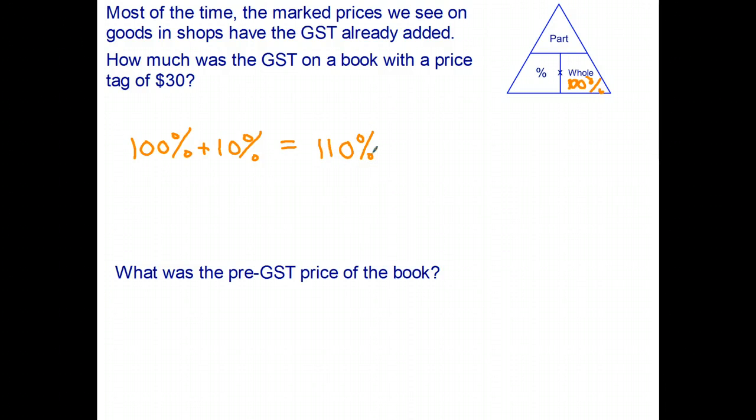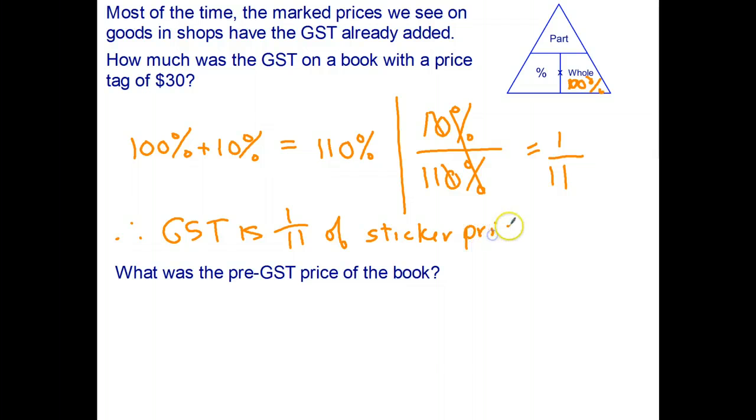Out of that, the GST is 10%. So the GST is 10% of the 110%. That can be simplified—knock off a couple of zeros and the percents cancel out—and the GST is therefore one-eleventh of the sticker price. Of course, the way you can find one-eleventh of something is just to divide by 11.